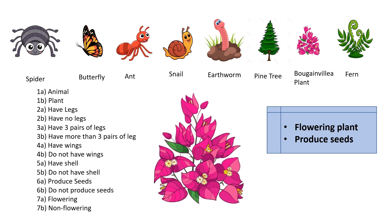The unknown organism with the traits of a flowering plant that also produces seeds is actually the Bougainvillea plant. I hope you understand how a dichotomous key works — it's quite easy, right?